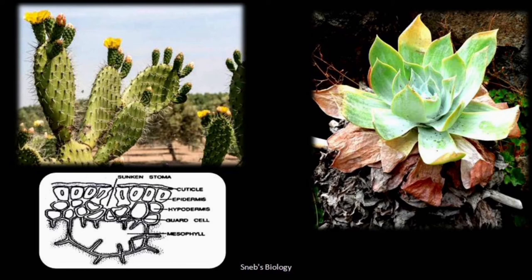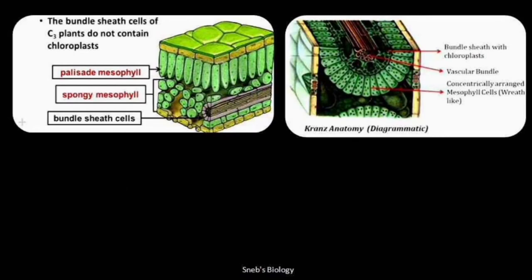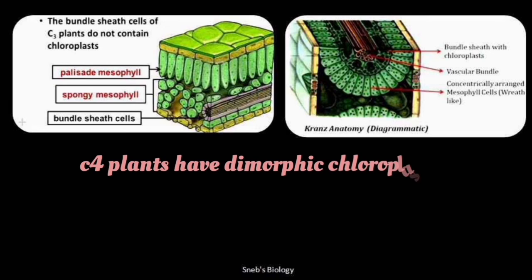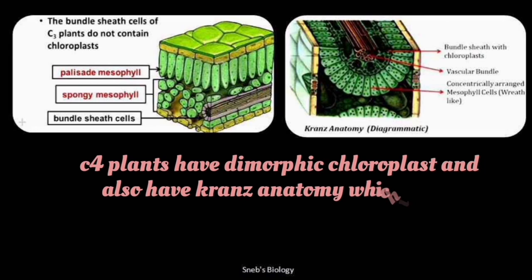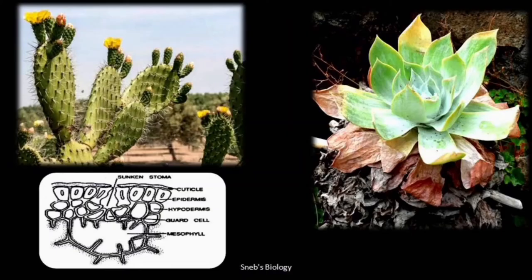Plants living in warmer conditions have adapted by following the C4 pathway. Normal dark reactions use the C3 cycle, but C4 plants have an adaptation: dimorphic chloroplasts — granal and agranal — and Kranz anatomy, which is a wreath-like arrangement of thick-walled bundle sheath cells. Because of these adaptations they can survive where solar intensity and temperature are high abiotic conditions.